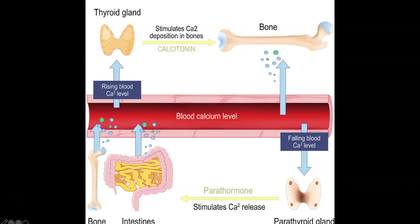As our calcium level rises, the thyroid gland is stimulated to release calcitonin, which tells the bone to reabsorb calcium so that calcium goes back into the bone and we don't have a high calcium level in the bloodstream. There's a constant balance between these two components maintaining our calcium level.